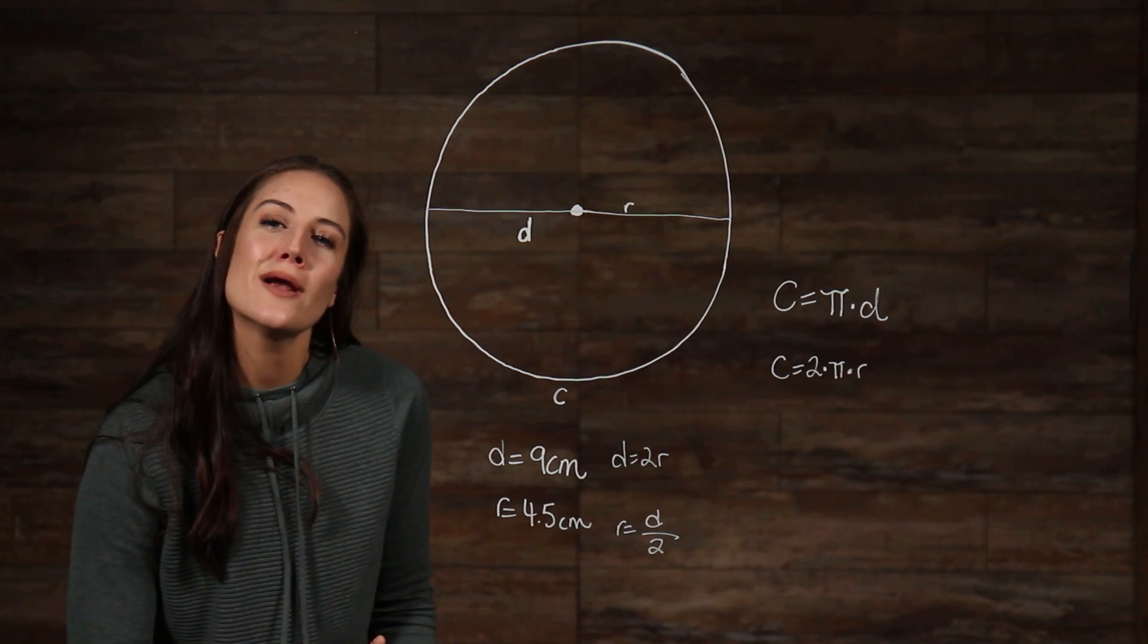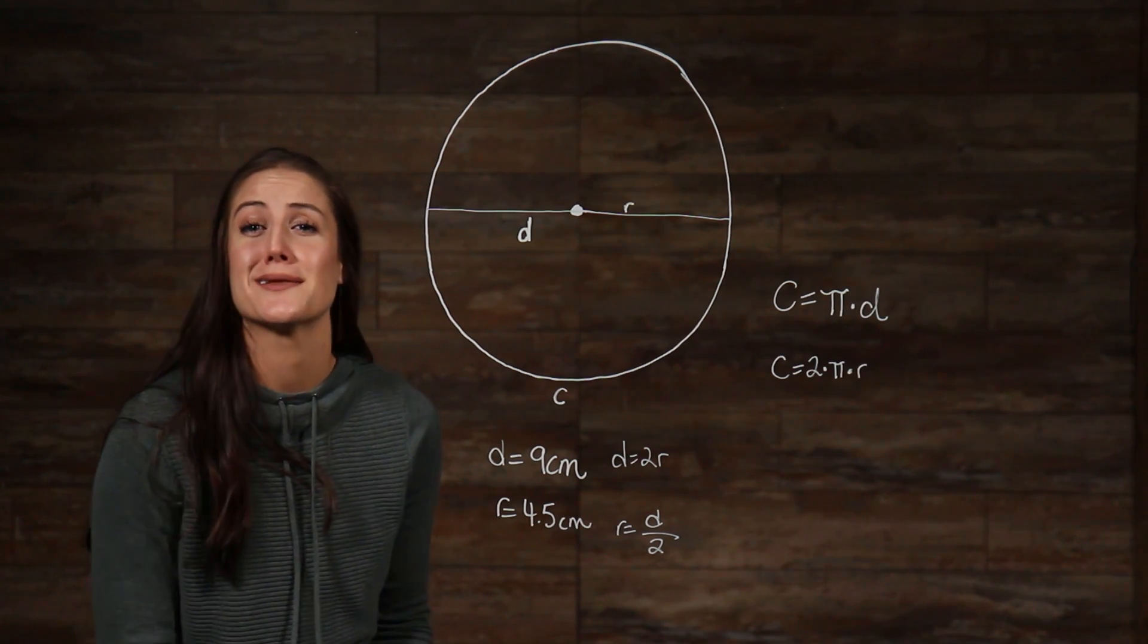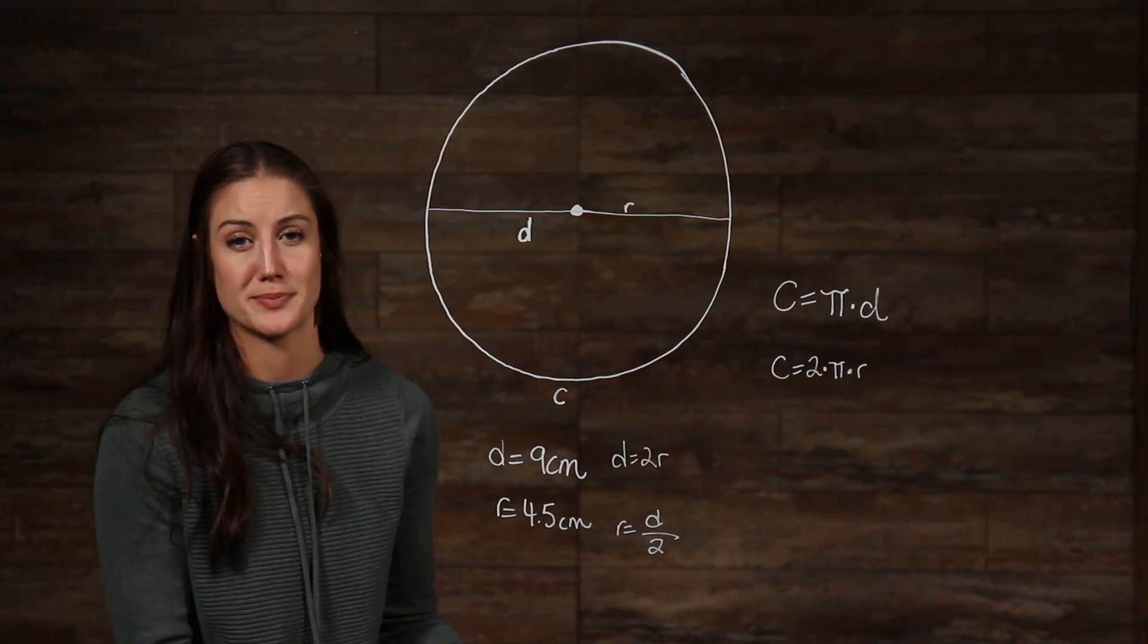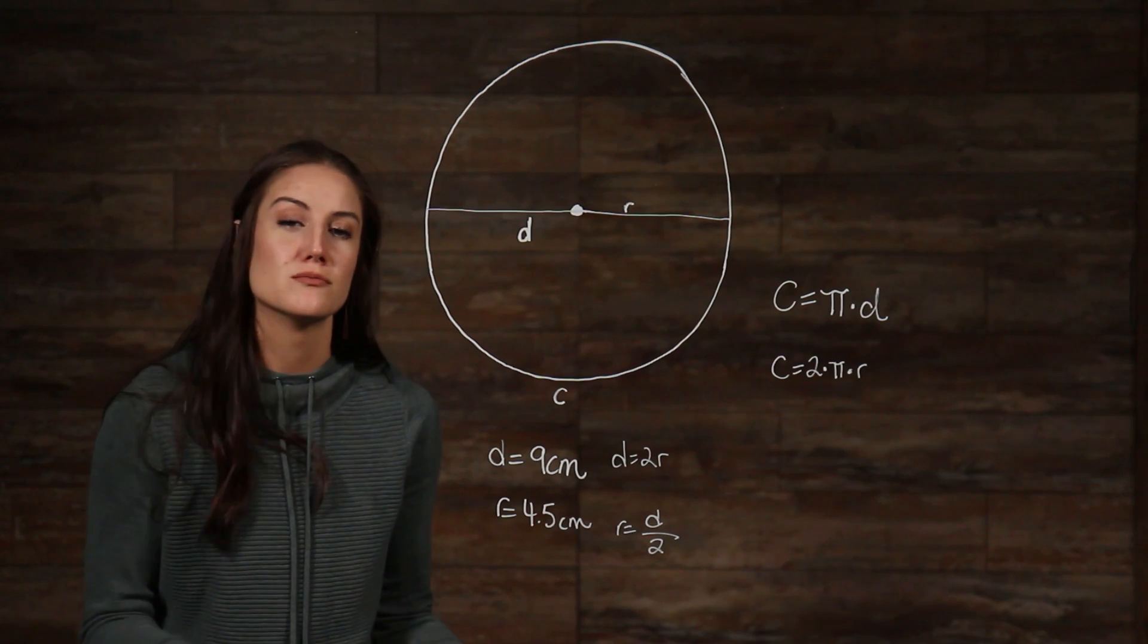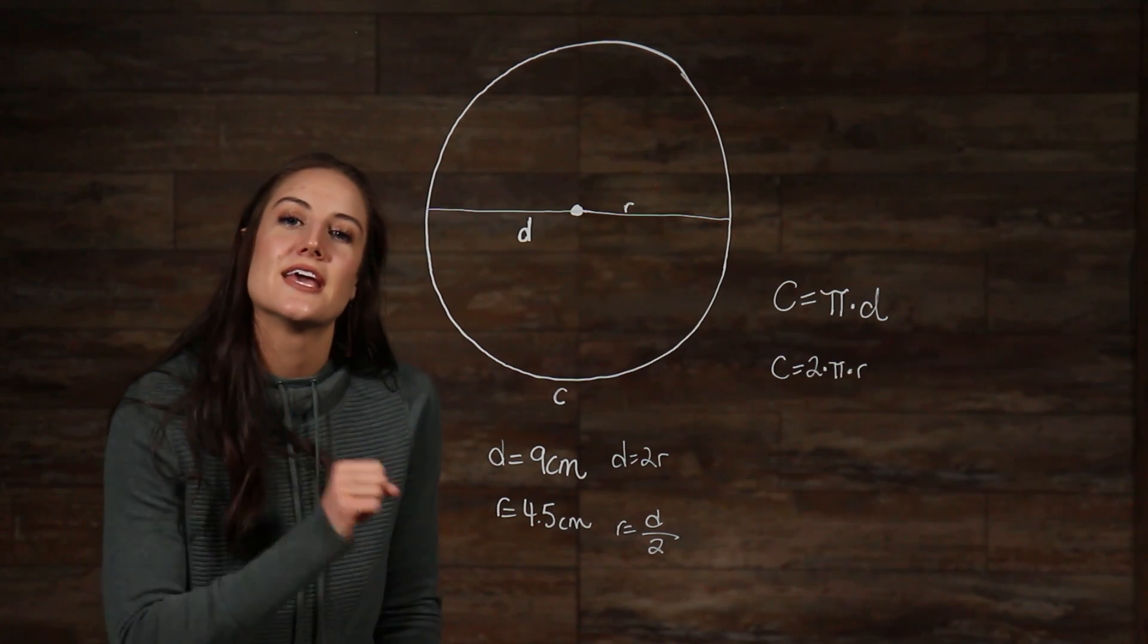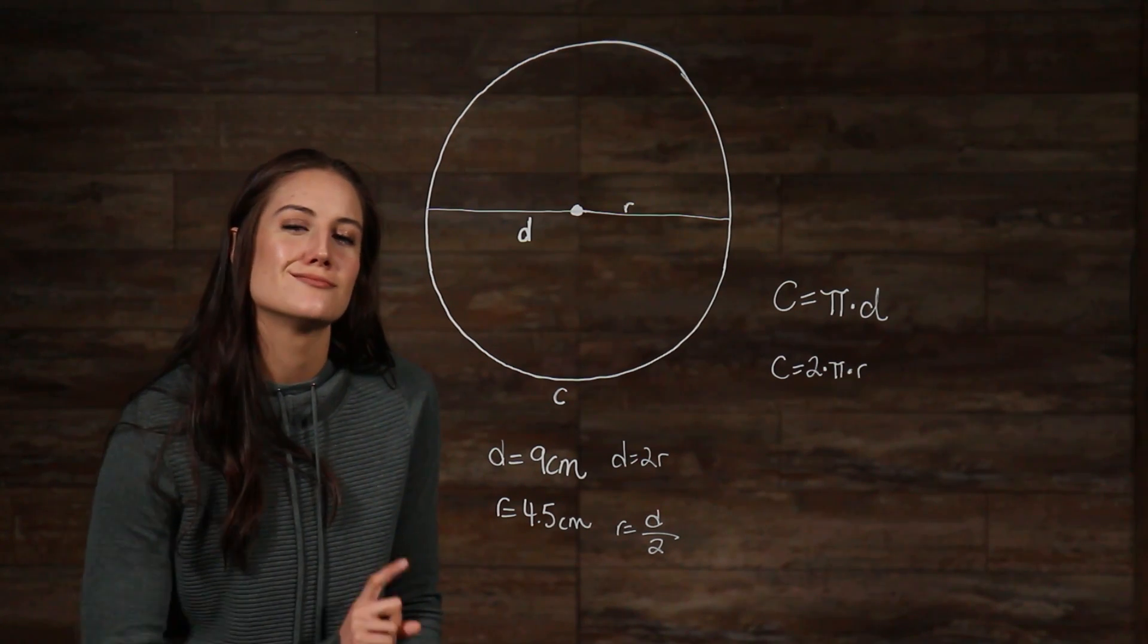Now, you may be asking, well, where did pi come from, and why do we all of a sudden get the circumference if we multiply said pi by our diameter? Who decided that? If you're not asking that question, you should. And I'm going to answer it anyways.